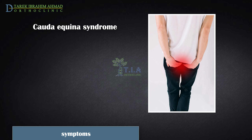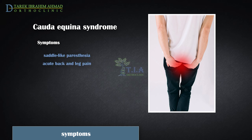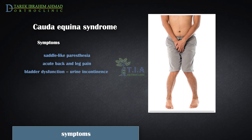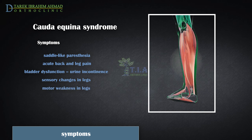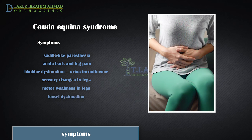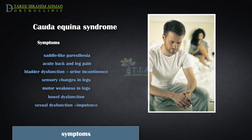The diagnosis of cauda equina syndrome is made clinically by characteristic symptoms of saddle-like paresthesias combined with acute back and leg pain, bladder dysfunction which leads to overflow incontinence, unilateral or bilateral sensory changes in the legs, unilateral or bilateral motor weakness in the legs, bowel dysfunction, and rarely sexual dysfunction or impotence in men.